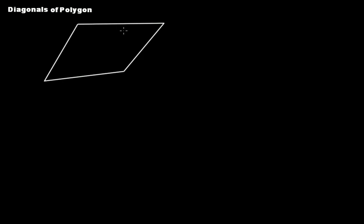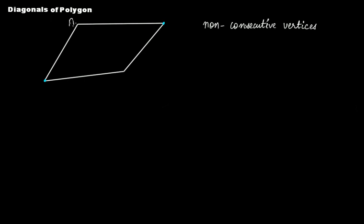In this video tutorial, I'm going to discuss diagonals of a polygon. The first figure here is a quadrilateral — a four-sided polygon. Now, let me name the vertices: if I name them A, B, C, and D...